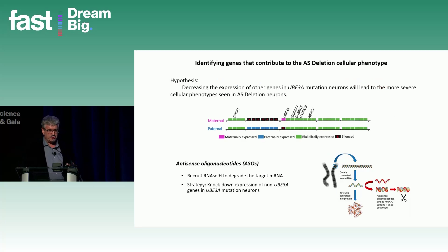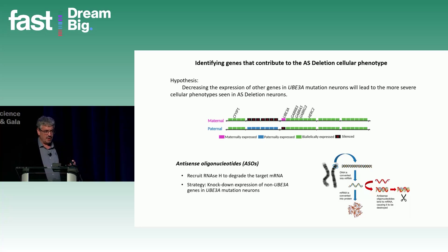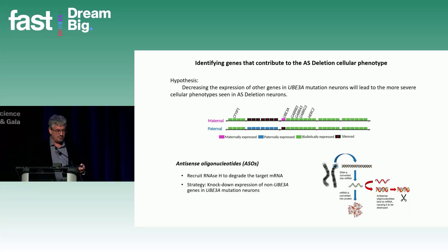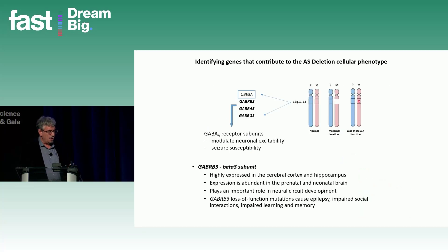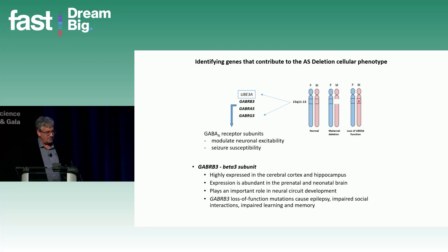We want to use an approach to figure out what other genes may contribute to a phenotype more severe in deletion neurons, using ASOs to decrease expression of specific non-UBE3A genes. The prediction is that if those genes contribute to phenotypes in deletion AS, they should make cellular phenotypes more severe in the deletion neurons. Highlighting the importance of GABA-A receptor subunits in the deleted region, we focused on the GABA-beta-3 subunit, which may be the one most likely to contribute to Angelman pathology.